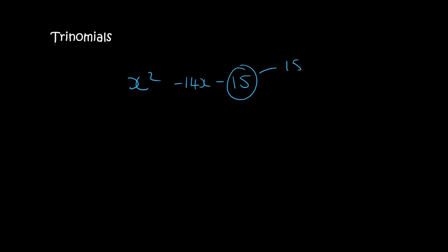15 is the same as 15 times 1, or 5 times 3. So, 15 and a 1 can definitely make minus 14. How? You could say minus 15 plus 1, because that does give you minus 14. So, we open up two brackets, and we say x and x, and we have minus 15 plus 1.